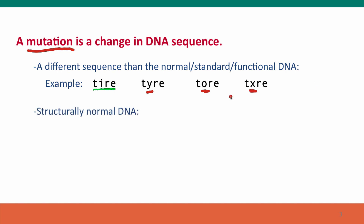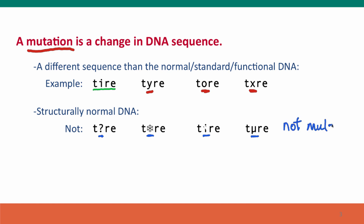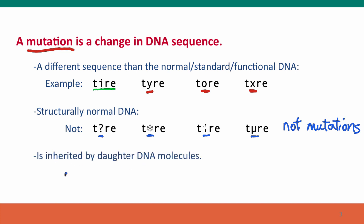The change must produce something that's still structurally normal DNA. Structurally normal text just has normal letters, but question marks or snowflakes in the middle of words, broken characters, or symbols from another language are not structurally normal. None of these are mutations, partly because a mutation must be inherited by daughter DNA molecules — you have to be able to pass it on — and these structures are not things that DNA polymerase would recognize, so they can't be inherited.